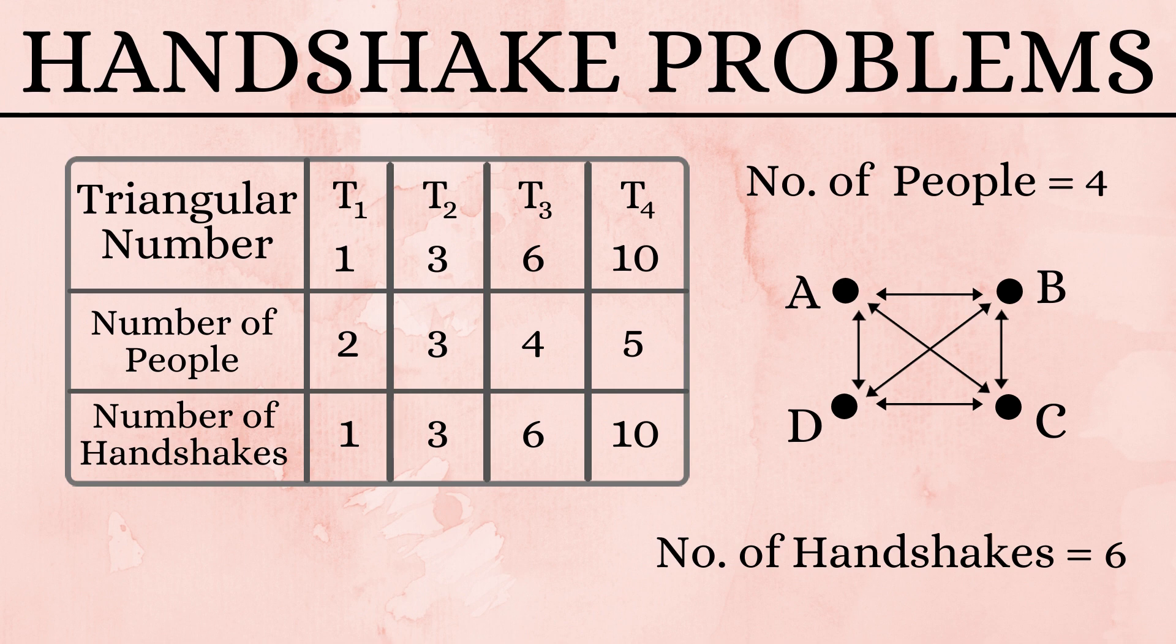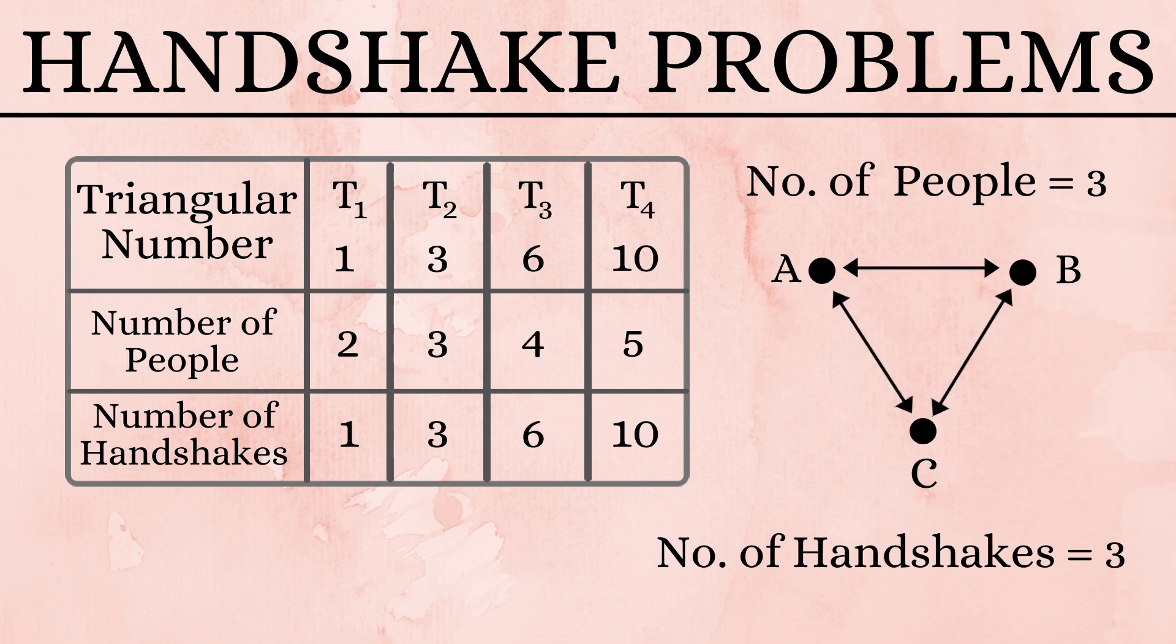For four people, it is the third triangular number. For three people, the number of handshakes is the second triangular number.